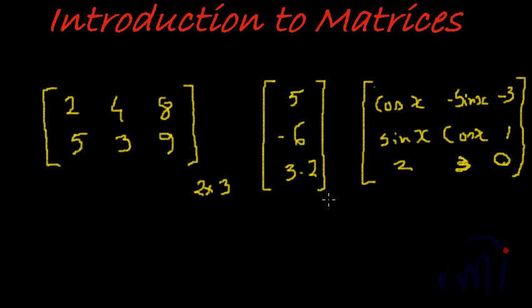And this here is a 3 row and one single column, so this is a 3 cross 1 matrix. And the last one has 3 rows and 3 columns, so this is a 3 by 3 matrix.